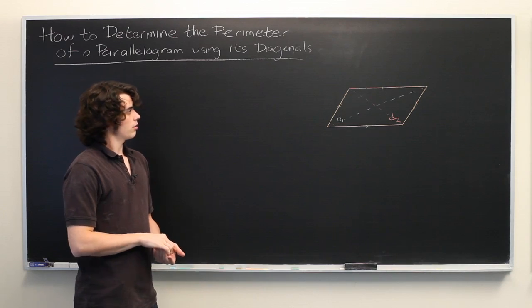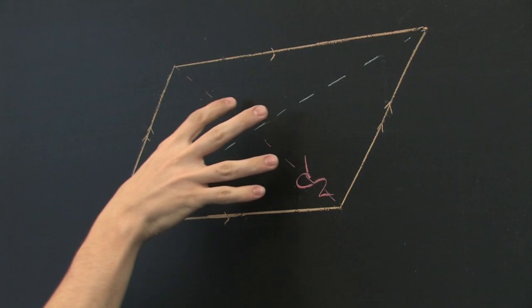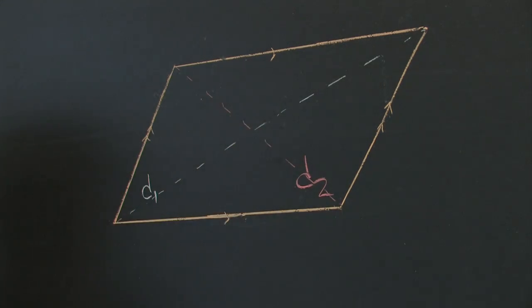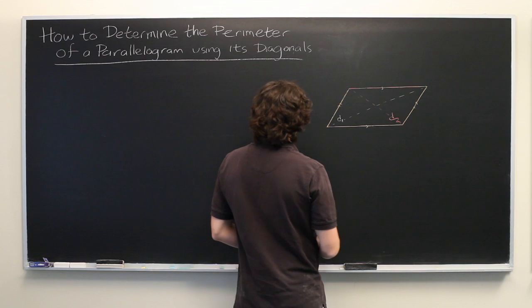But the answer of course does not exist. There is no formula because the lengths of the two diagonals do not uniquely determine the shape. And in fact it's not too difficult to demonstrate why that's the case.